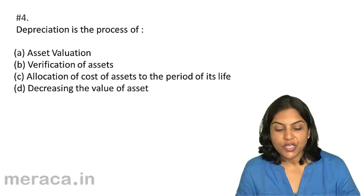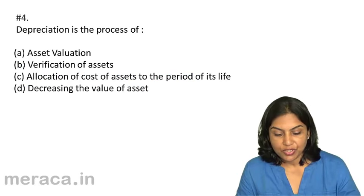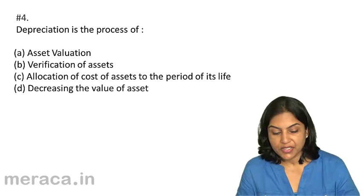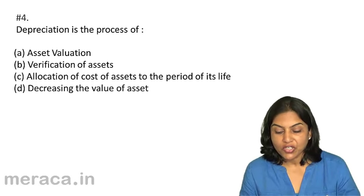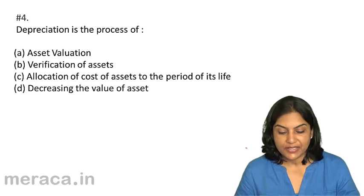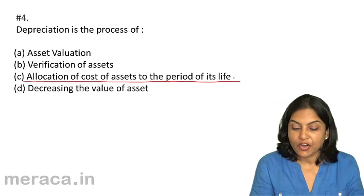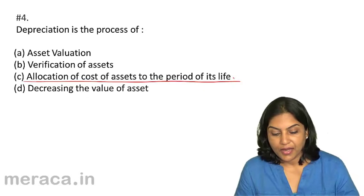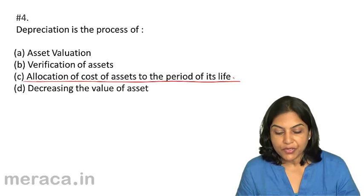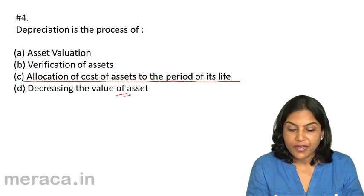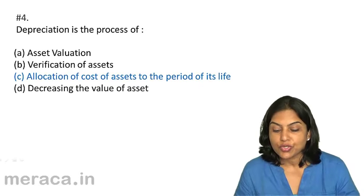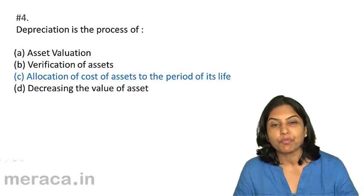Question 4: Depreciation is the process of — a. asset valuation; b. verification of assets; c. allocation of cost of assets to the period of its life; d. decreasing the value of asset. The answer should be c: allocation of cost of assets to the period of its life. It is true that as a result of depreciation the value of an asset comes down, but depreciation is defined as the process of allocation of the cost of assets to the period of its life. Therefore, the correct answer is 4c.